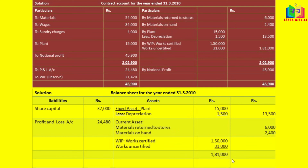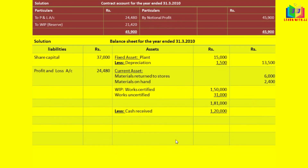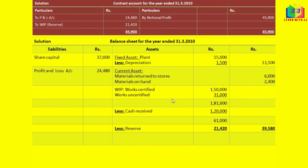We will write work in progress as 1,81,000. From this work in progress, we have to subtract the cash received as well as the reserve. Cash received is 1,20,000, so we subtract it here. We also subtract the reserve from this work in progress. The resulting work in progress figure is 39,580. We finished writing everything in the balance sheet.